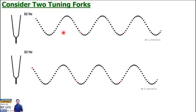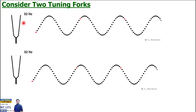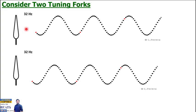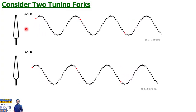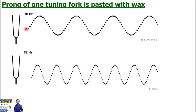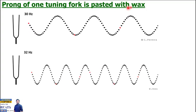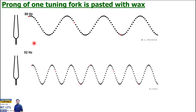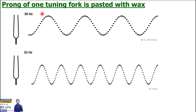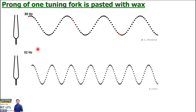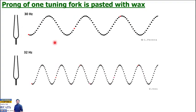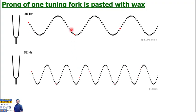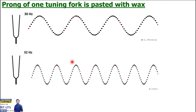Let's say we paste wax on the prong of one tuning fork, which will have a damping effect and decrease the frequency. Watch carefully that when we have wax pasted, the frequency becomes, let's say, 30 hertz instead of 32 hertz. Now the frequencies are different - this is 32 hertz, this is 30 hertz. There is a slight difference. The wavelengths are different and frequencies are different.